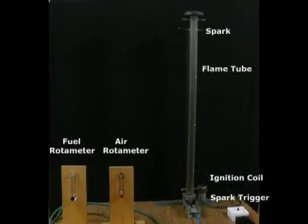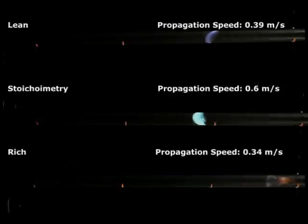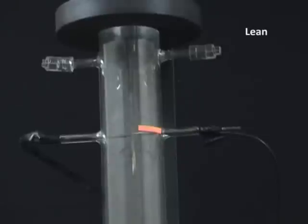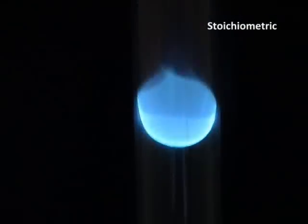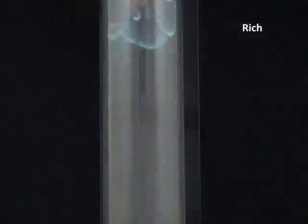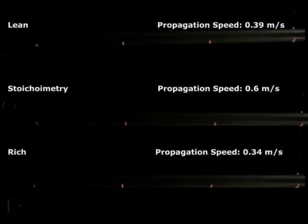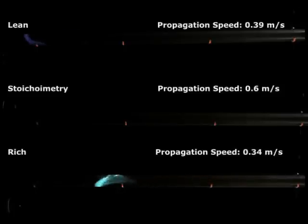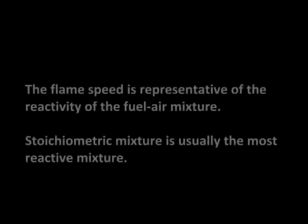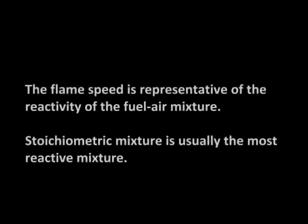This needs a one-sided open tube with an arrangement for filling the tube with a gaseous mixture of known composition and sparking at the top. Note that the stoichiometric flames are faster than lean or rich mixtures. Rich mixtures actually have cellular structures. The flame speed is representative of the reactivity of the fuel-air mixture.